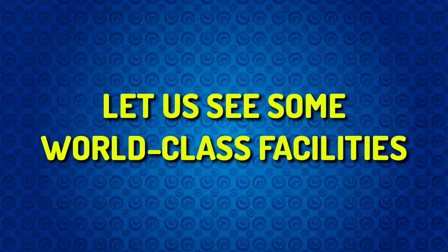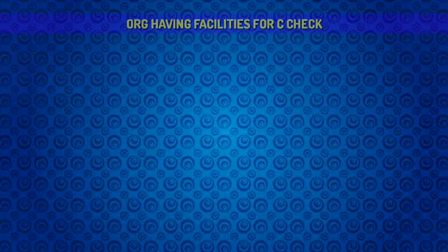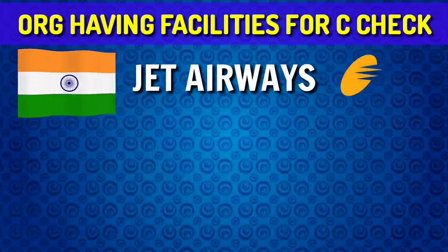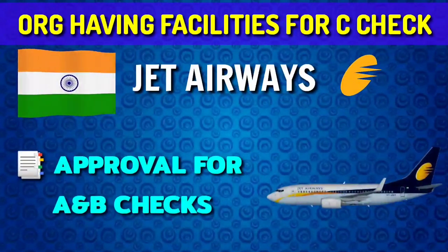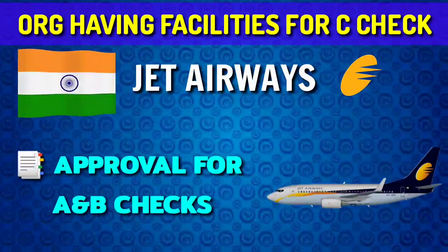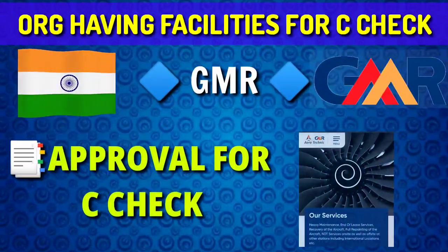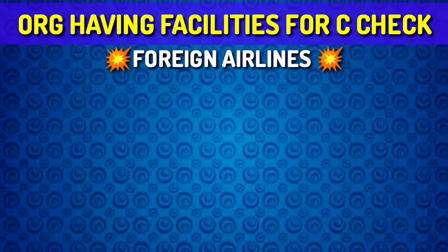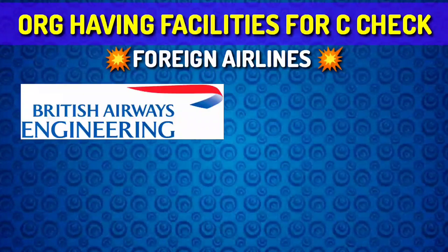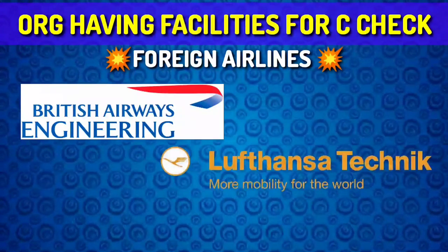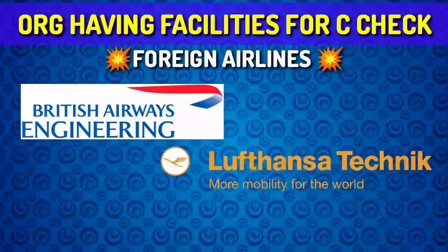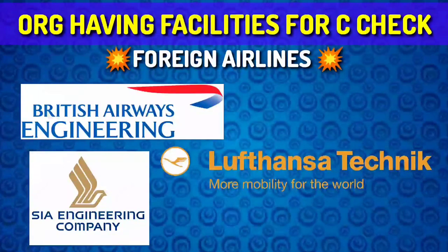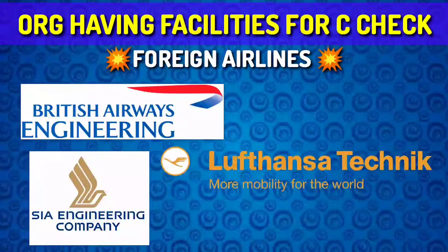Looking at some MRO facilities worldwide: in India, Air India has approval for all four checks, while Jet Airways used to do A and B checks and contracted its Airbus A330 for C check to Air India. GMR performs C checks for many airlines around the globe. British Airways has its own engineering unit, British Airways Engineering, while Lufthansa has Lufthansa Technik. Singapore Airlines has SIA Engineering Company. Various other foreign airlines also perform their own C and D checks in their own facilities.